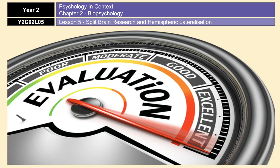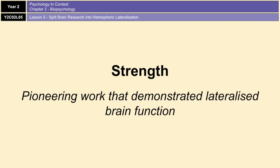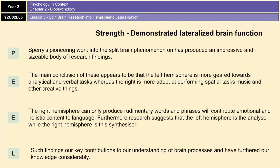Now it's time for evaluation. The first point is a strength, focusing on the fact that this research was very pioneering and influential and gave us a lot of knowledge we didn't have beforehand. Because of this type of research, we have an impressive body of findings. It has shown us what the left and right hemispheres are geared towards and what they're good for, which are key contributions to our understanding of the brain and brain processes. That is a definite strength of this type of research.